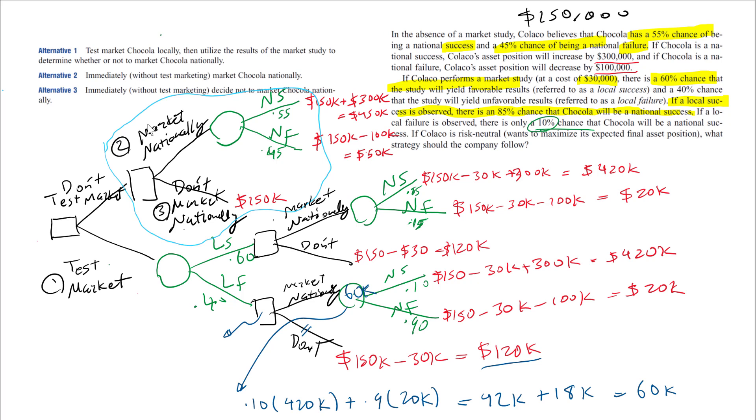I'm moving backward, right? So the value of this decision is going to be the largest, which is 120K. Let's move up to this branch, to this event. The value of that event is going to be 0.85 times 120K plus 0.15 times 20K.